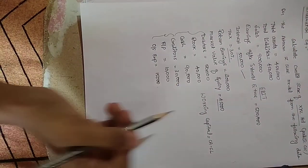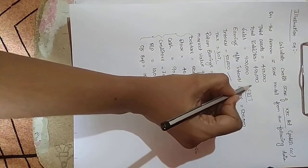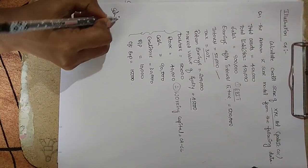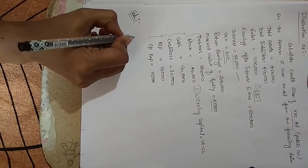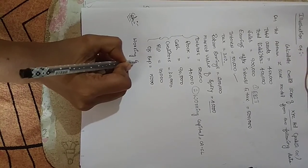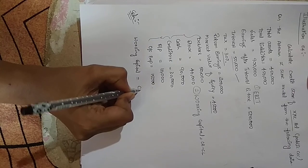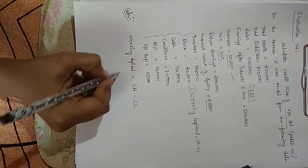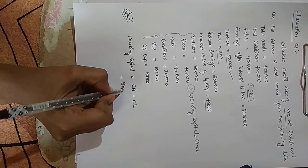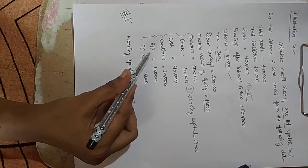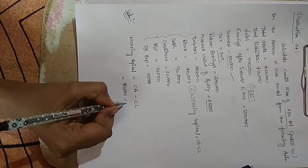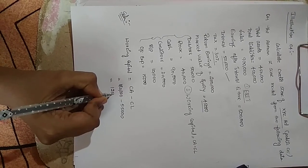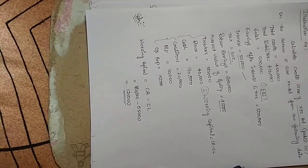In this problem there are two adjustments: first, we have to find out the EBIT, and second, we have to find out the working capital. Working capital equals current assets minus current liabilities: 50,000 plus 40,000 plus 90,000 equals 1,80,000, minus current liabilities — creditors plus bills payable plus outstanding expenses — which is 55,000. So working capital is 1,80,000 minus 55,000, which equals 1,25,000.